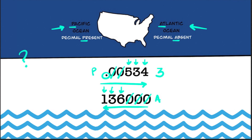So in this example, only 6, 3, and 1 are significant, so we have three sig figs.